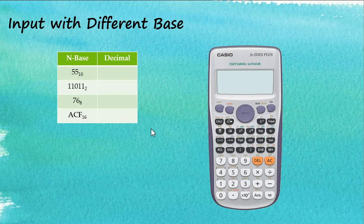In previous videos, we have discussed the number systems, where there are four number systems in the calculators: the decimals, the hexadecimals, the binaries, and the octals. We learned how to convert a number from one base to another base, and we also discussed the numbers and the letters used for hexadecimal systems, and the differences between variables and numbers in hexadecimal systems.